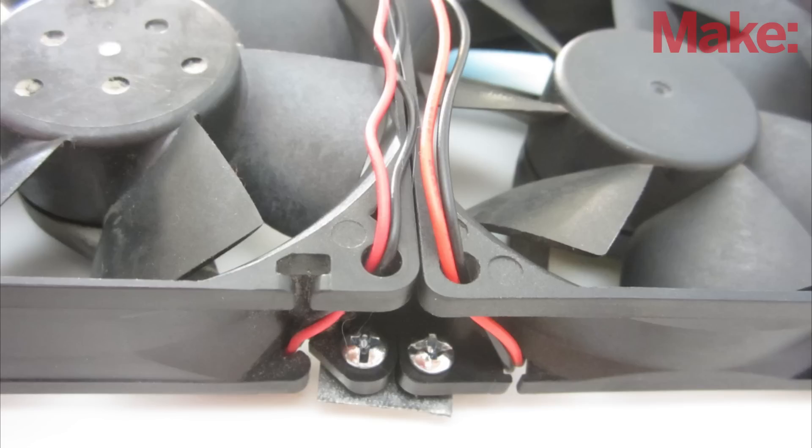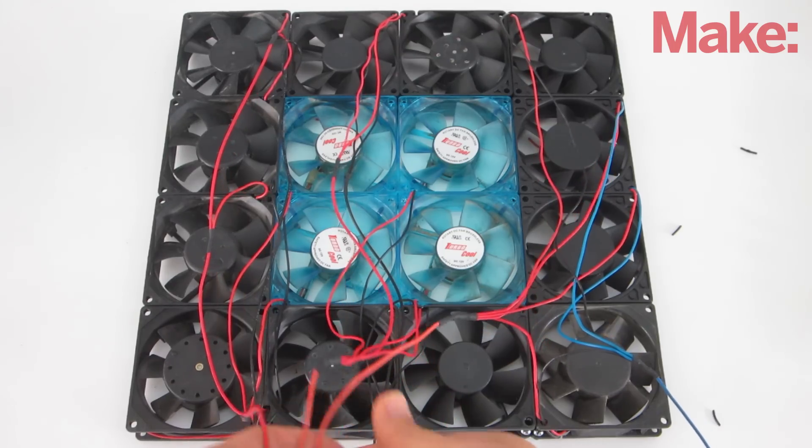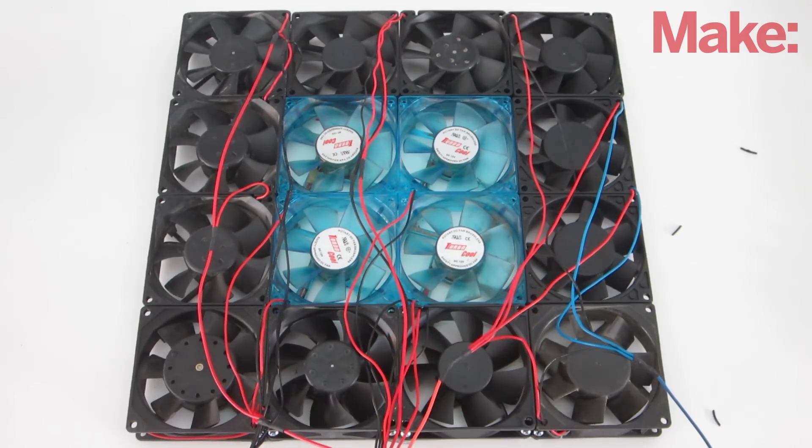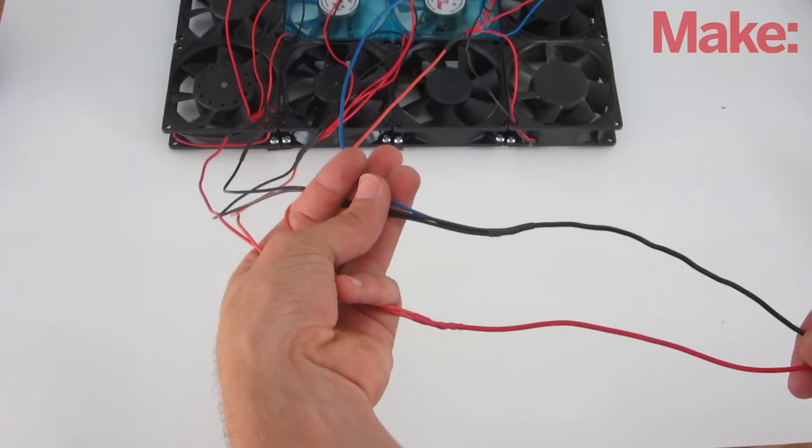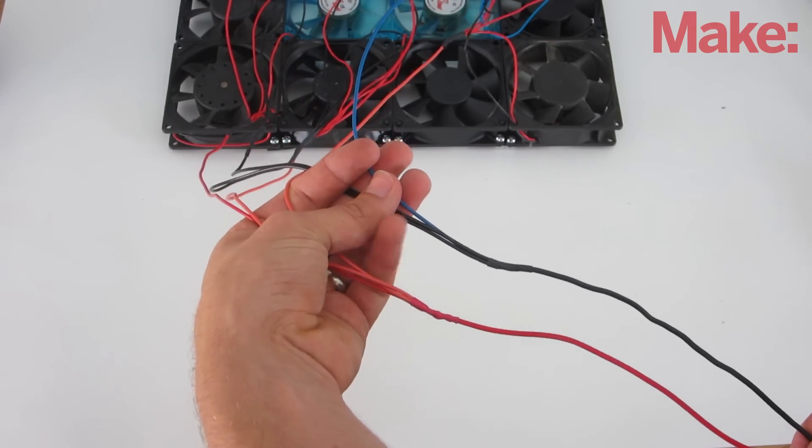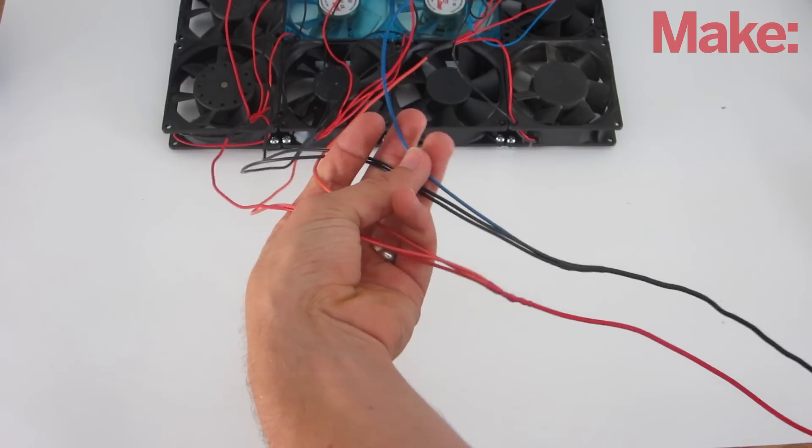Now you need to connect the wires. Start by connecting the positive and negative wires together in rows. Use heat shrink tubing to insulate each connection. Then, connect the rows together so that all the positive wires are connected and all the negative wires are connected.